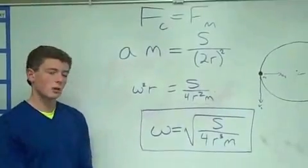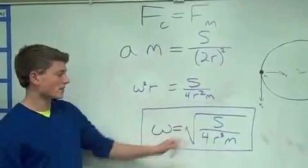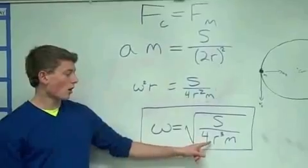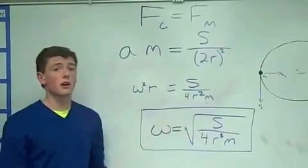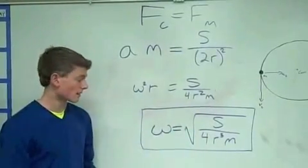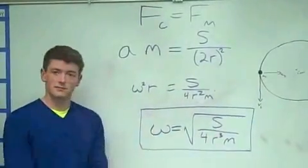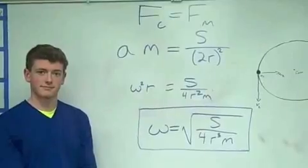Using a combination of angular and linear physics concepts, we were able to determine an equation for the angular speed necessary for a given magnet strength, radius, and mass.